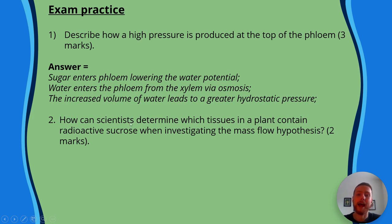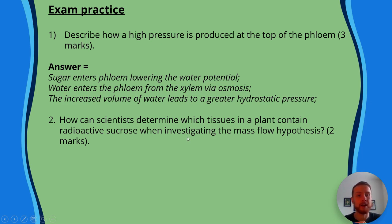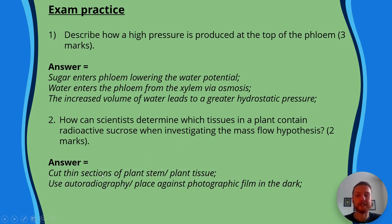Question two: how can scientists determine which tissues in a plant contain radioactive sucrose when investigating the mass flow hypothesis? Answer: cut a thin section of plant stem or plant tissue for one mark, then use autoradiography or place against photographic film in the dark for the second mark.